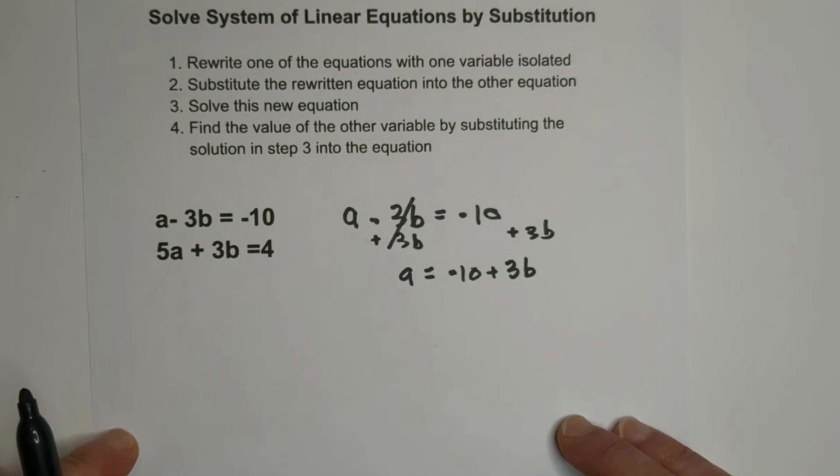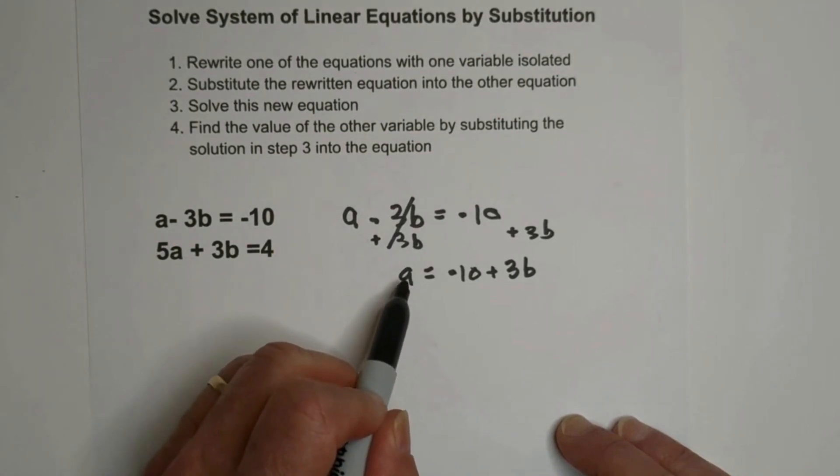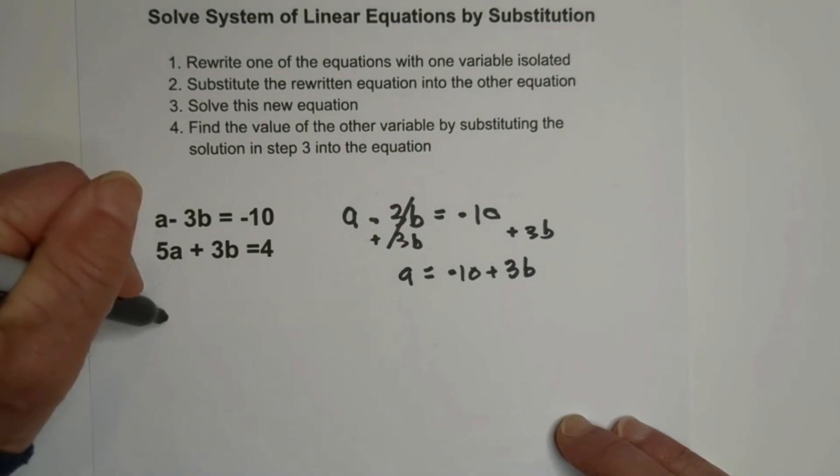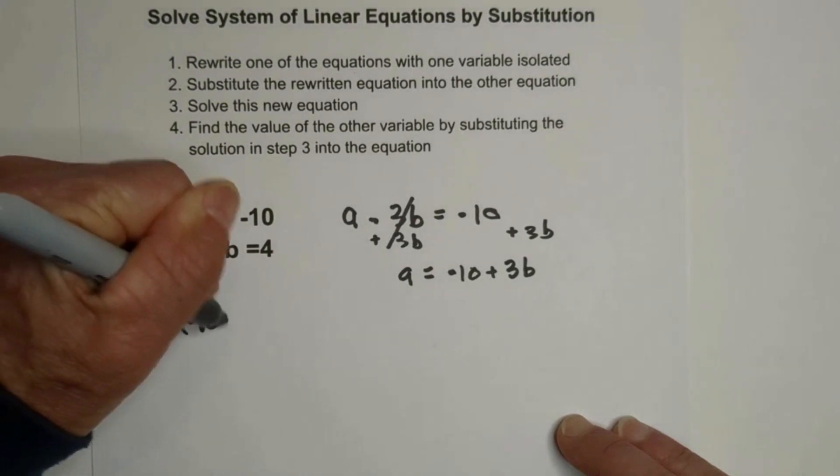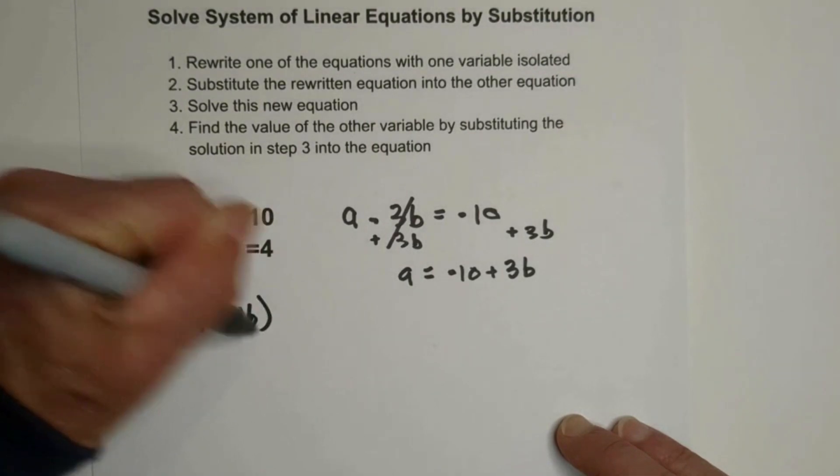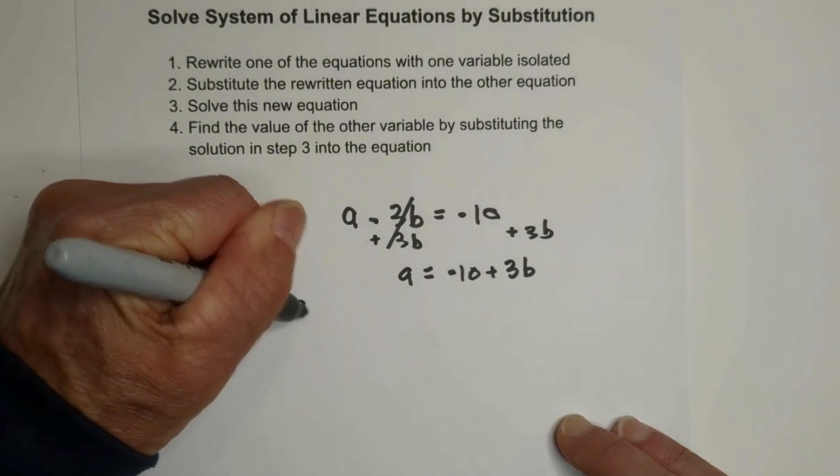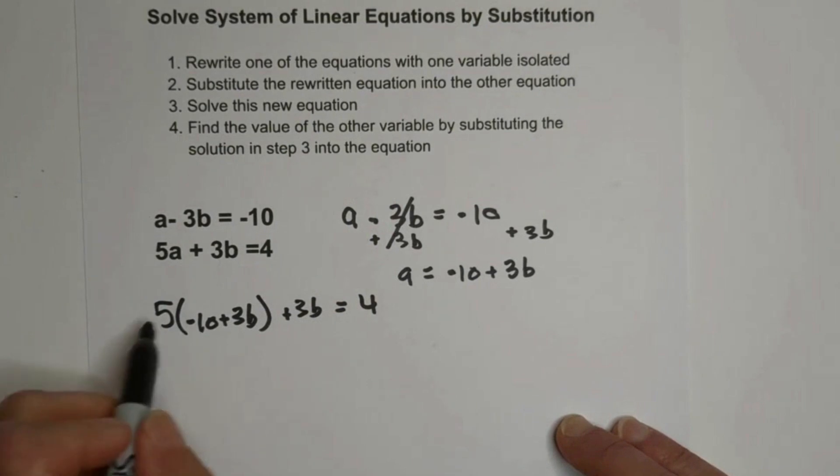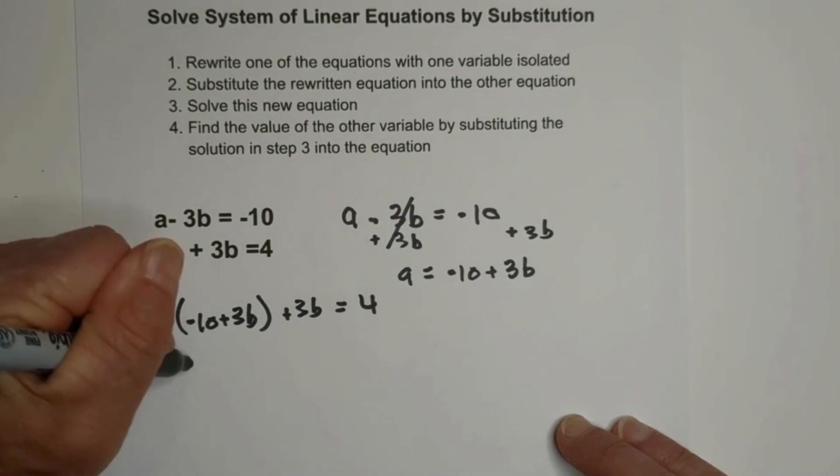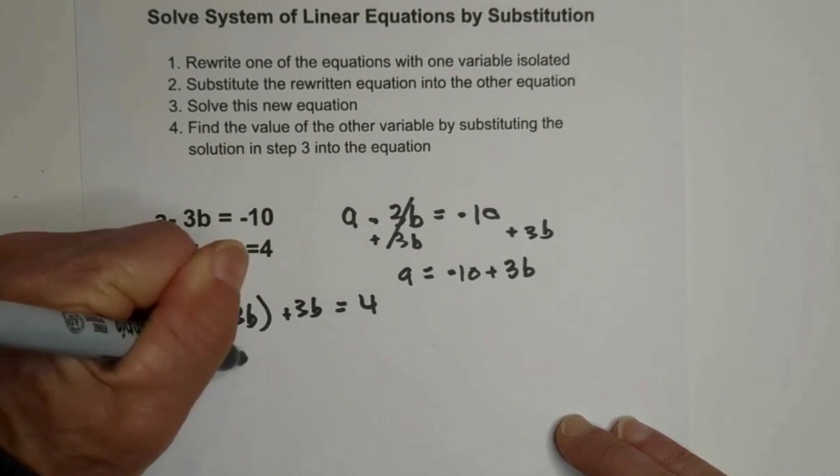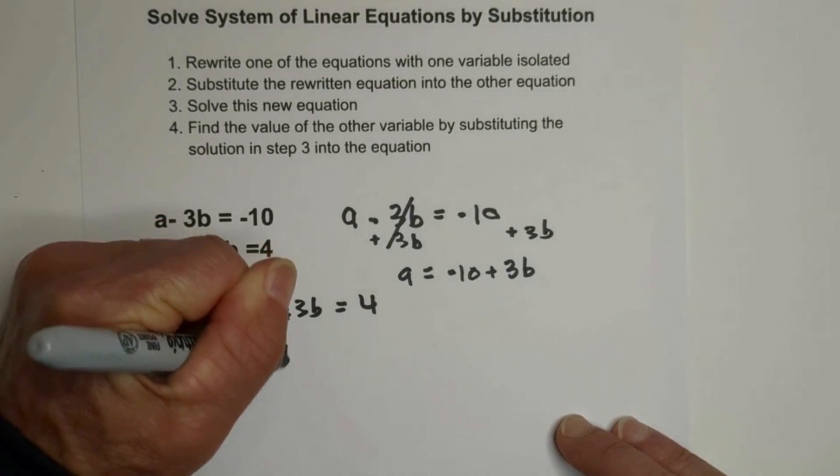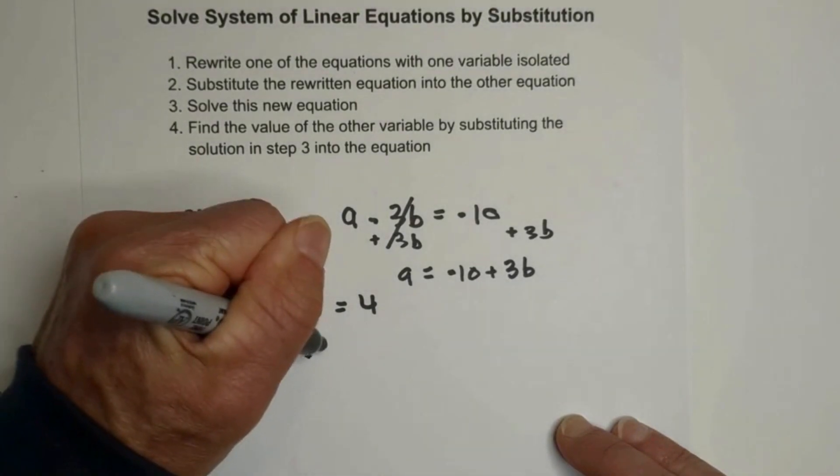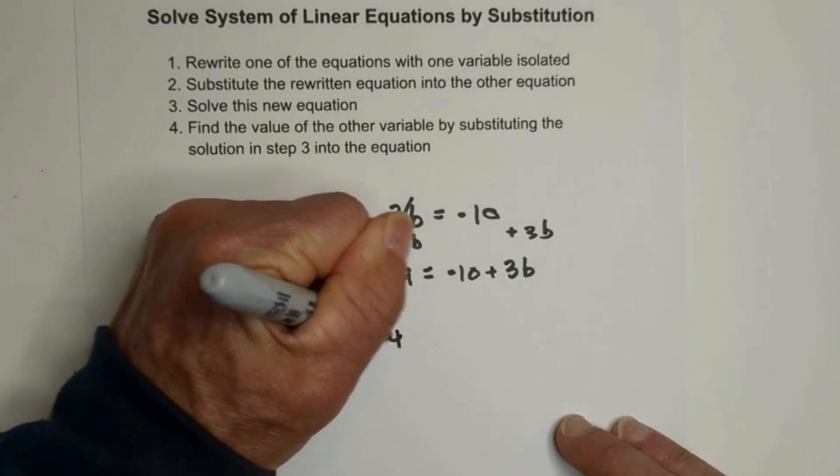Now I need to move on to step two. I'm going to substitute this answer for A into the other equation. So now I have 5 times negative 10 plus 3B plus 3B equals 4. So let's distribute. 5 times negative 2 is we have negative 50 plus 15B because 5 times 3B. Then we have this 3B here equals 4.